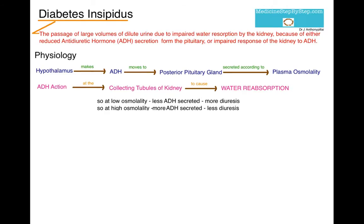So normally, at low osmolality, less ADH is secreted by the posterior pituitary gland, and so there is more diuresis — the person passes more urine. If there is higher osmolality, more ADH is secreted, and so there is less diuresis — the person passes less urine.